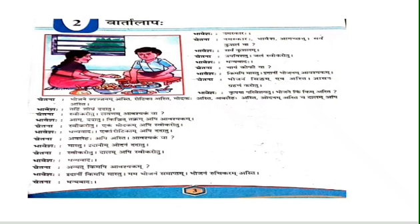Bhavesh says dhanyavad — thank you. Chetna asks: anyat kima api avashakam — do you want anything else? Bhavesh says: idanim kima api maastu — just now nothing is needed. Mama bhojanam samaktam — my lunch is over. Bhojanam ruchikaram asti — the food is tasty. Chetna says dhanyavad — thank you.